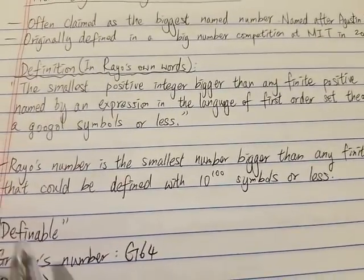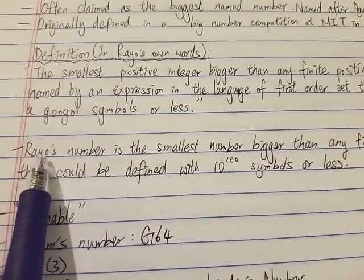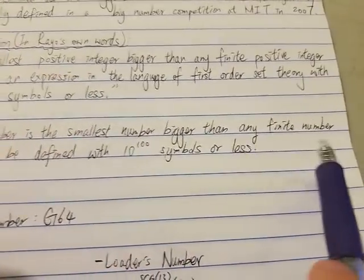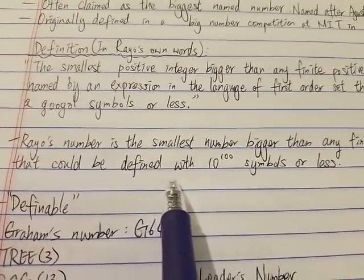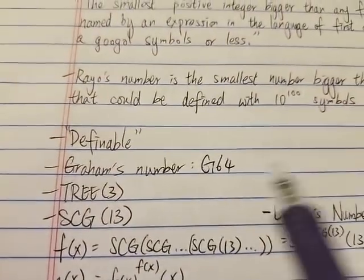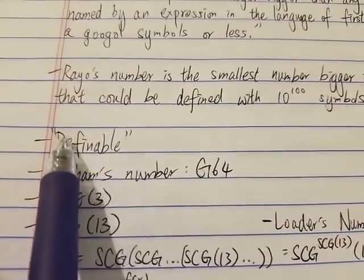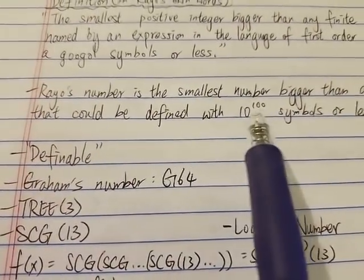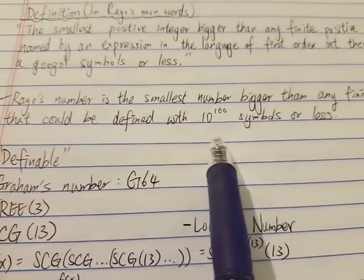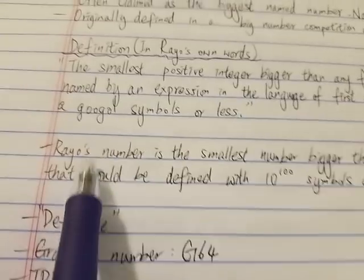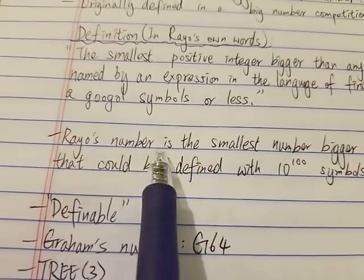So what does that mean? Basically, Rayo's number is the smallest number bigger than any finite number that could be defined with a googol symbols or less. It all depends on the word definable. In other words, any number that could be defined with a googol symbols or less, that number has to be smaller than Rayo's number.